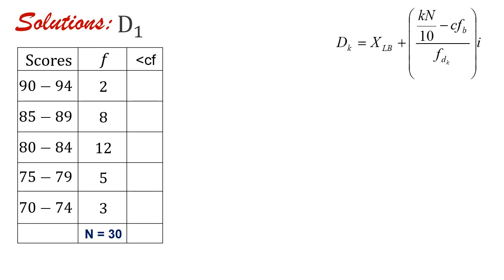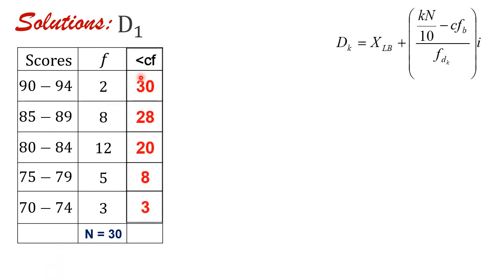Before applying the formula, let us first complete our frequency distribution table with our less than cumulative frequency. Whatever steps we used before in dealing with percentiles and quartiles for group data to fill in the less than cumulative frequency column, it would be the same here. We start with the frequency of our lowest class interval, which is 3, then add 5, then add 12, and so on. Our highest less than cumulative frequency is 30, which corresponds to our value of n, confirming our column is filled in correctly.